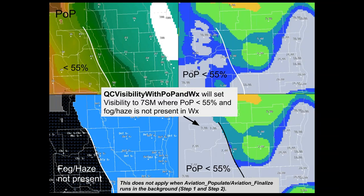In steps one and two of the transition process, where aviation populate and finalize are running in the background, this QC tool is actually turned off so you can see the low visibility values even if your weather group doesn't support it. However, when you run the TAF formatter, there's another check: it can't give you low visibility with no weather restriction. So if you don't have fog in your weather grid but you have low visibility, the TAF formatter still won't show that low visibility.